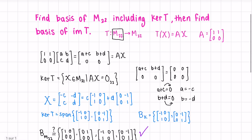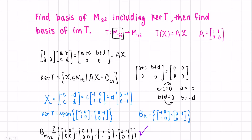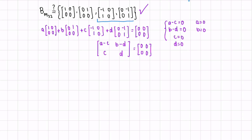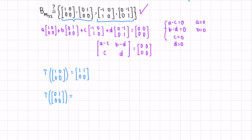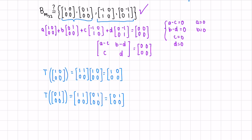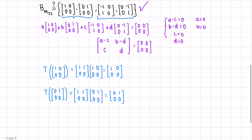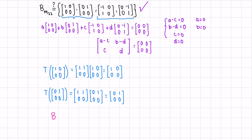Next, in order to generate a basis of the image of the transformation, we have two options. Let's first try it using the theorem. We have the kernel of the transformation included in a basis of the domain, so that means the other two matrices, if we transform them, will form a basis of the image of the transformation. Our transformation is the matrix A times whatever matrix we're transforming. This is a special case where when we applied the transformation, the matrices actually stayed the same. We can conclude that the basis of the image of the transformation is comprised of these two matrices.